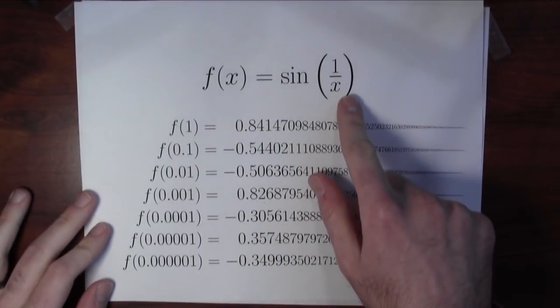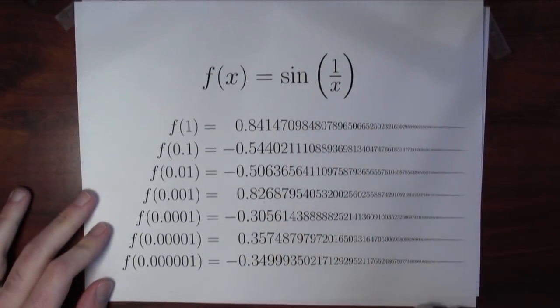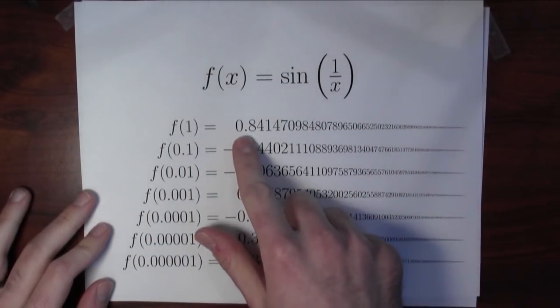Here's a table of values of the function f(x) equals sine 1 over x. f of 1, which is really sine of 1, it's like 0.8.